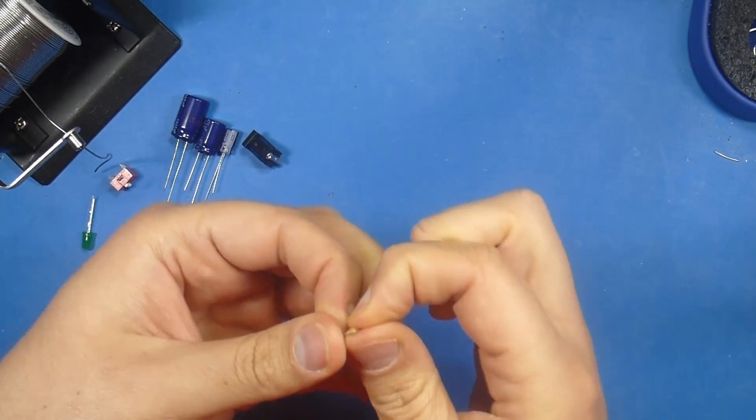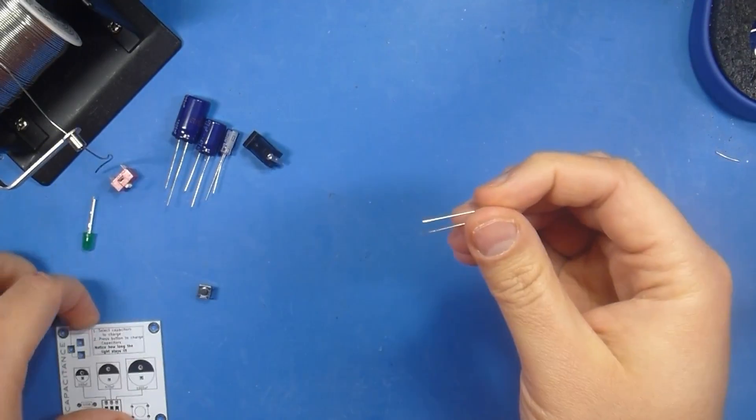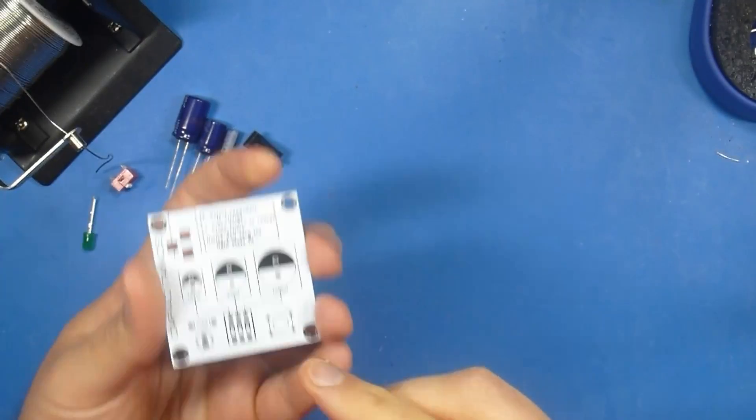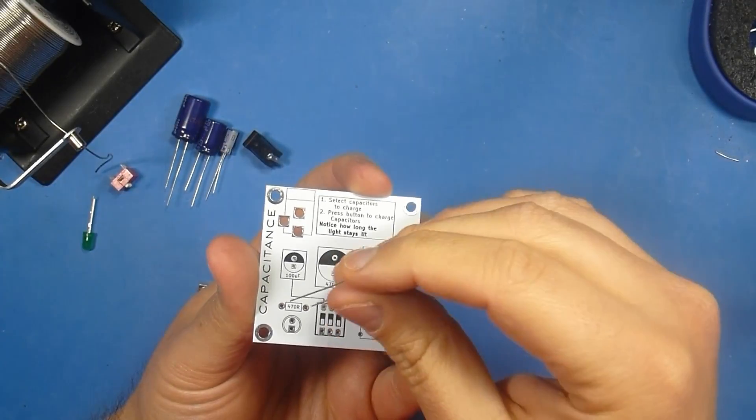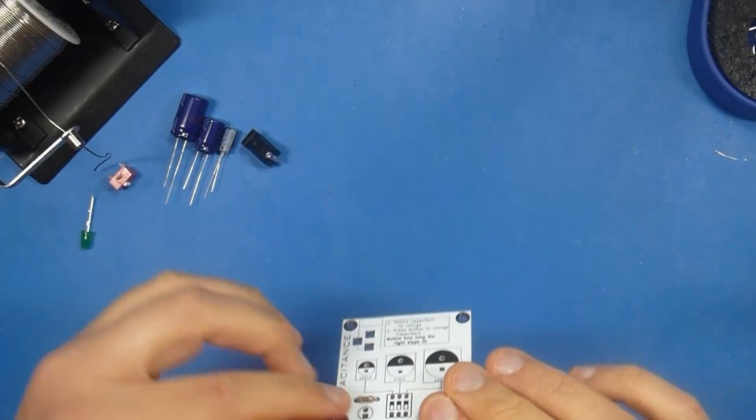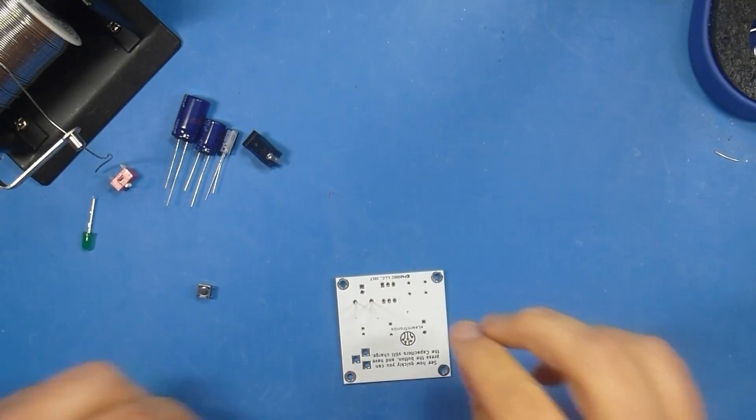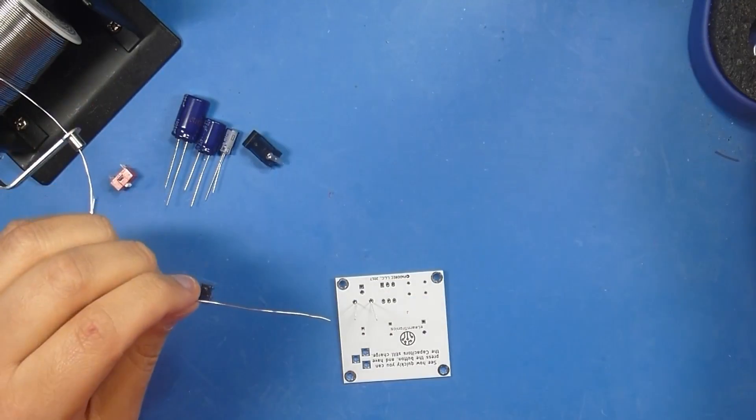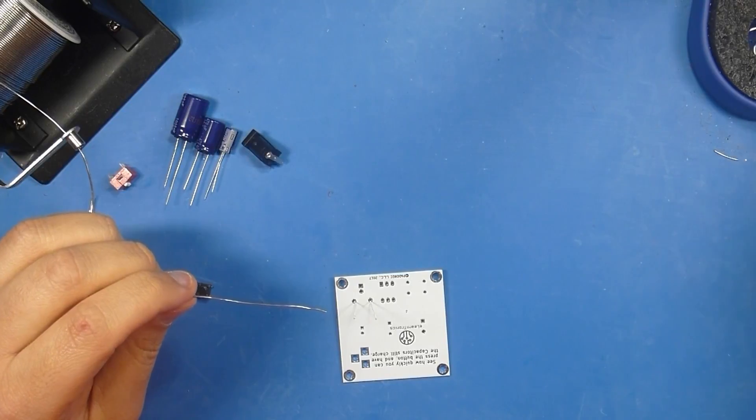We want whichever component is going to sit most flush. In this case it's the resistor. And it's marked here on the board 470 ohm or 470R. So we'll just slide it on through there. And go ahead and solder it up. We're diving right in.